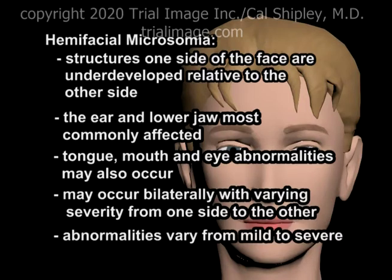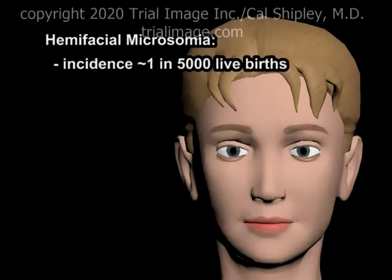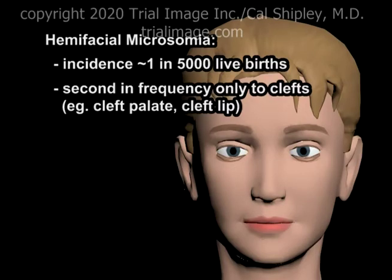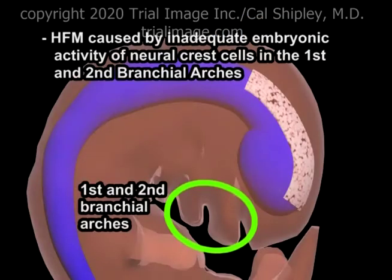Abnormalities may vary from mild to severe. The incidence of hemifacial microsomia is approximately 1 in 5,000 live births, and in terms of congenital craniofacial abnormalities, it occurs with a frequency which is second only to clefts, such as cleft lip or cleft palate. The root cause of hemifacial microsomia is inadequate embryonic activity of neural crest stem cells in the first and second branchial arches.